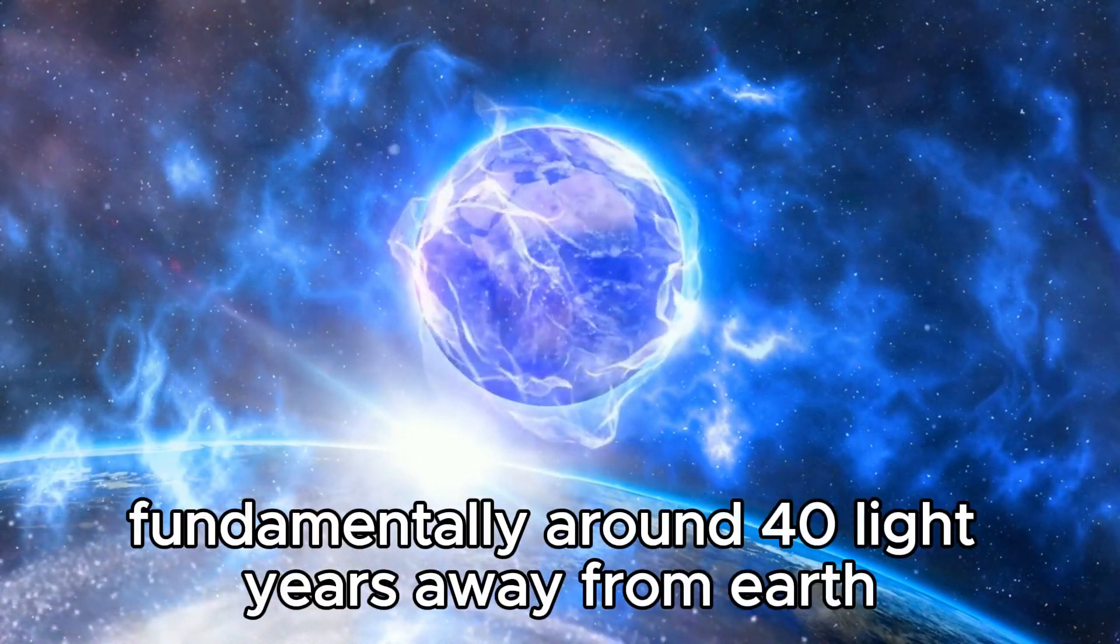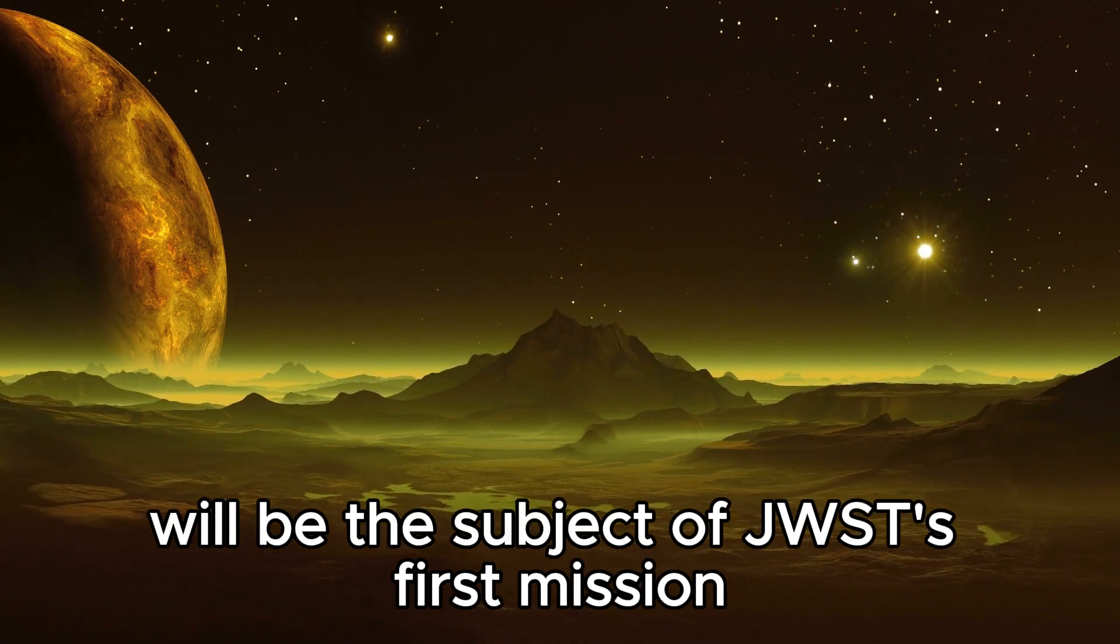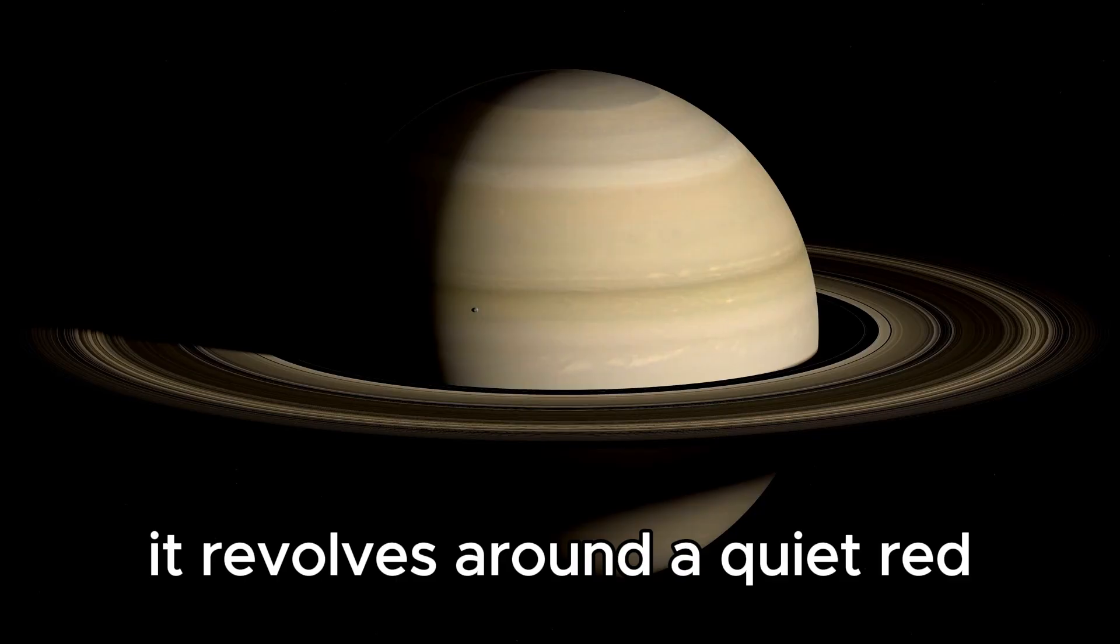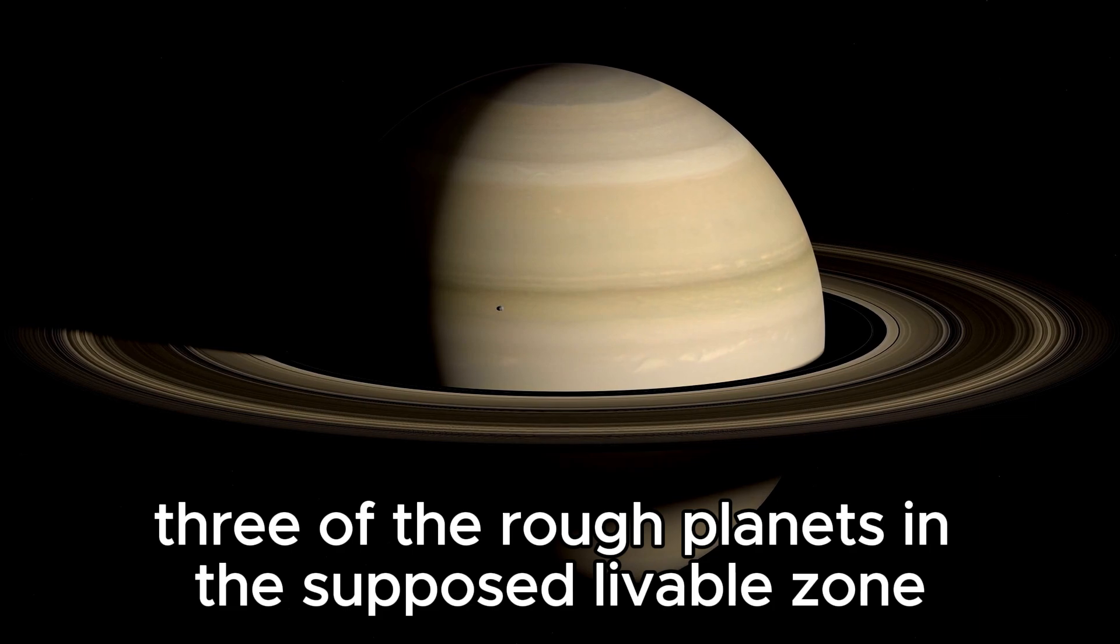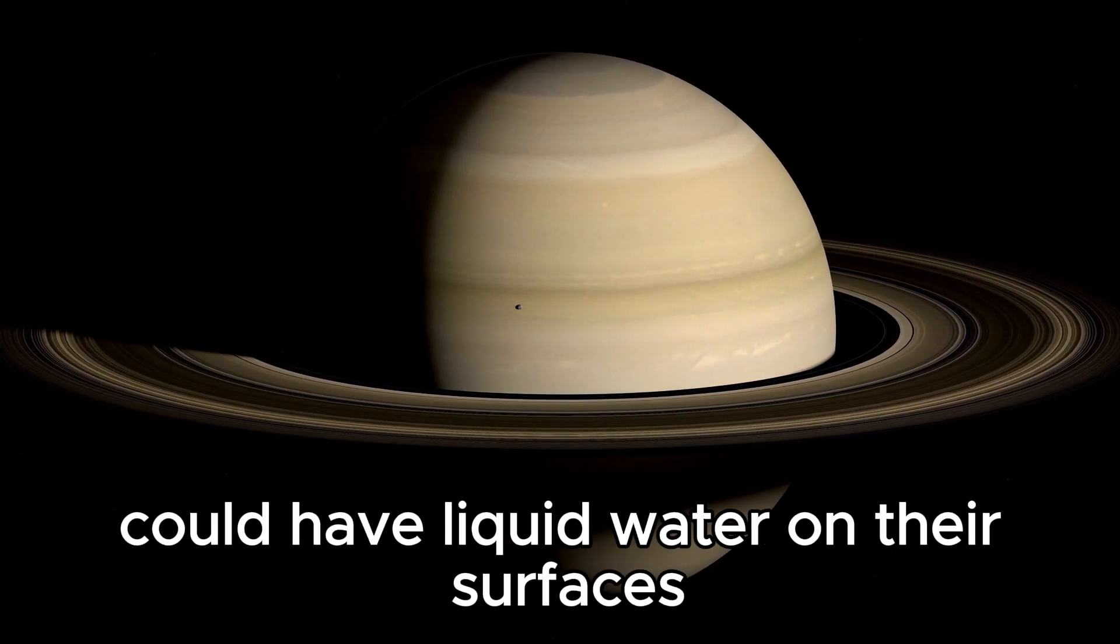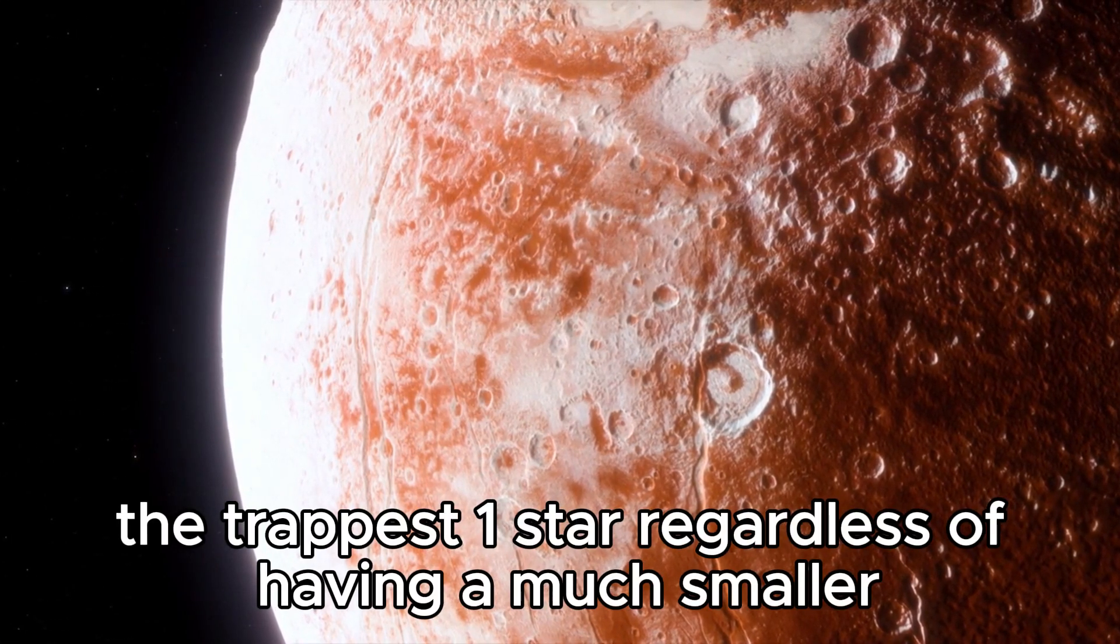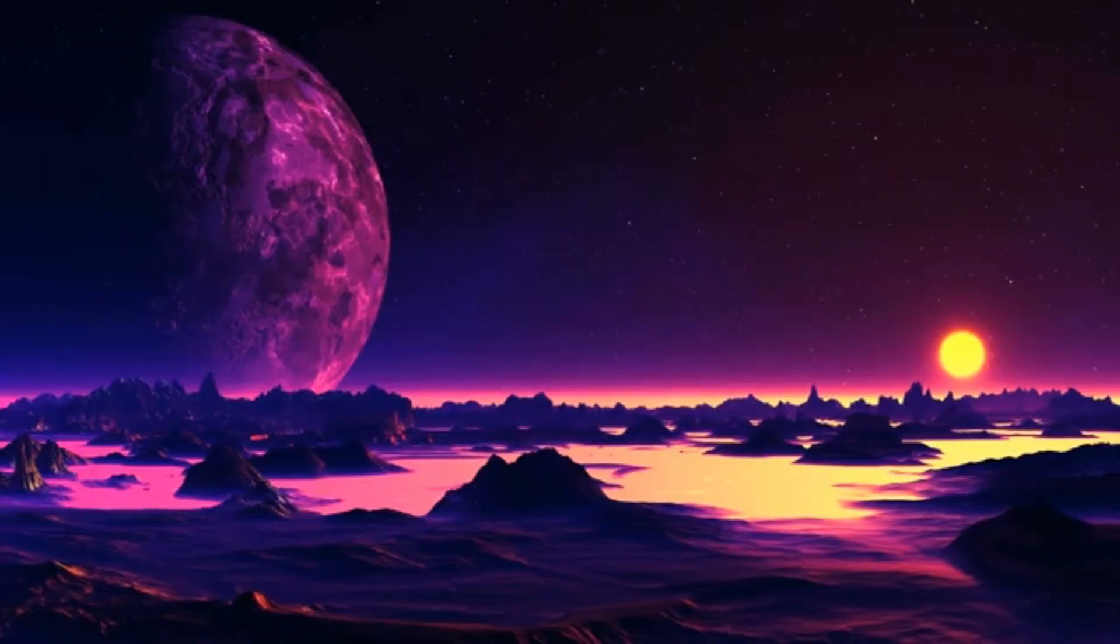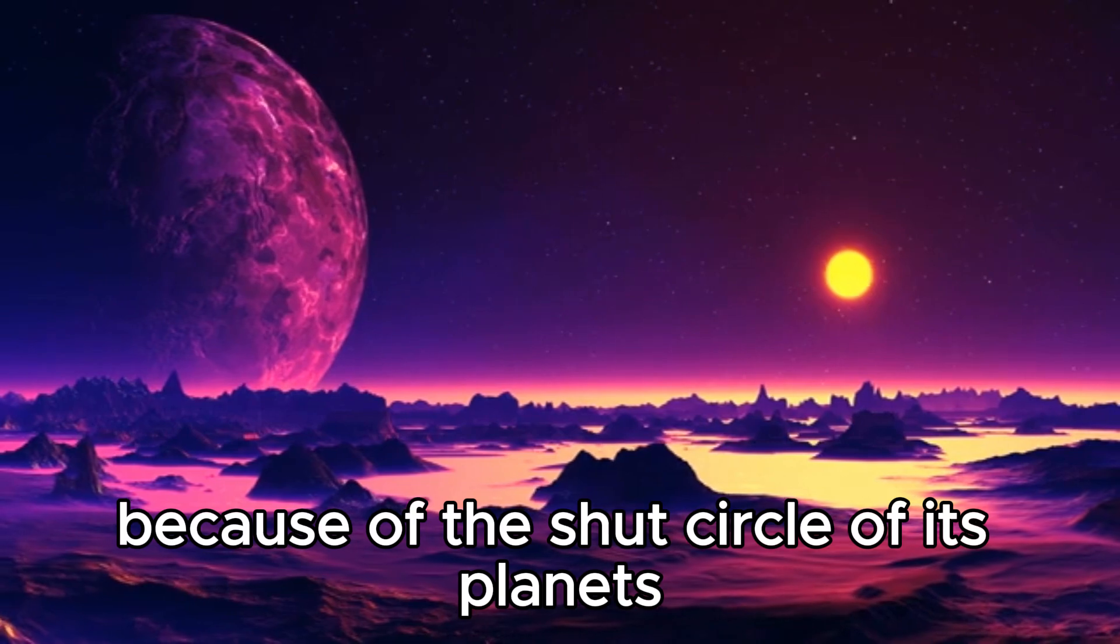Approximately 40 light years away from Earth, the TRAPPIST-1 planetary system will be the subject of JWST's first mission. It revolves around a quiet red dwarf star with seven Earth-sized rocky planets. Three of the rocky planets in the habitable zone could have liquid water on their surfaces. The TRAPPIST-1 star, regardless of having a much smaller and cooler mass than our Sun, emits light that is similar to that of Earth.